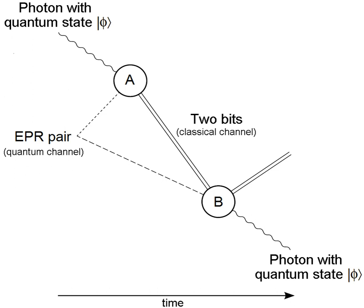At the sender, a single photon source can be created by heavily attenuating a standard telecommunication laser such that the mean number of photons per pulse is less than one. For receiving, an avalanche photodetector can be used. Various methods of phase or polarization control can be used, such as interferometers and beam splitters. In the case of entanglement-based protocols, entangled photons can be generated through spontaneous parametric downconversion. In both cases, the telecom fiber can be multiplexed to send non-quantum timing and control signals.